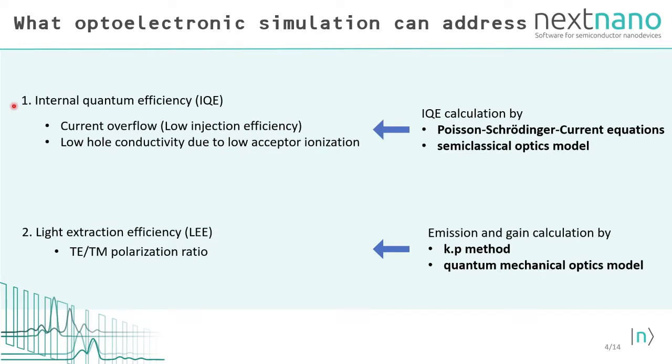There are several factors that lead to the low IQE and low LEE in UV LEDs. Here we list some of them that can be analyzed by the optoelectronic simulation like NEXTNANO++. IQE can be affected by the current overflow and the low hole conductivity, for instance. These effects can be well analyzed by the IQE calculation by means of Poisson-Schrödinger current equation and semi-classical model for optical properties. On the other hand, one possible reason that causes the low LEE is the TE and TM polarization ratio of emitted light. This ratio can be calculated by the k·p method and quantum mechanical optics model that can include the dependence of aluminum content or strain.